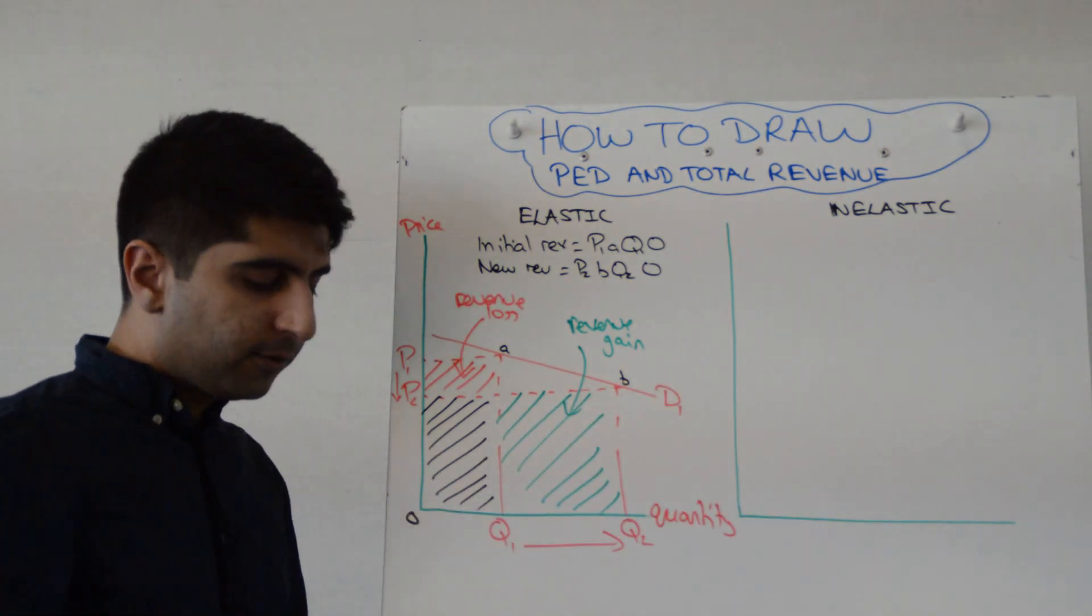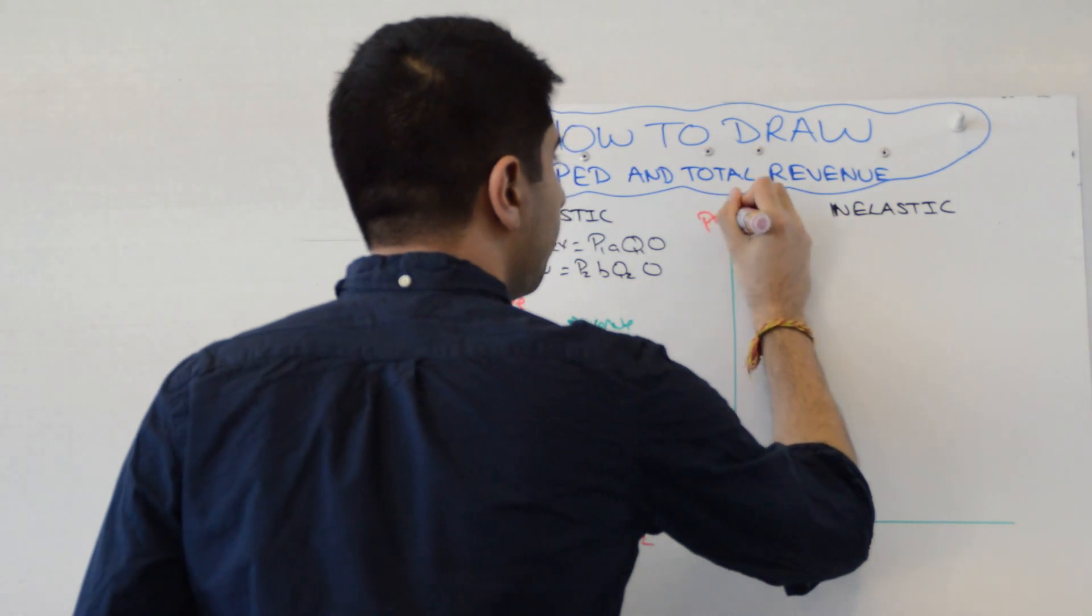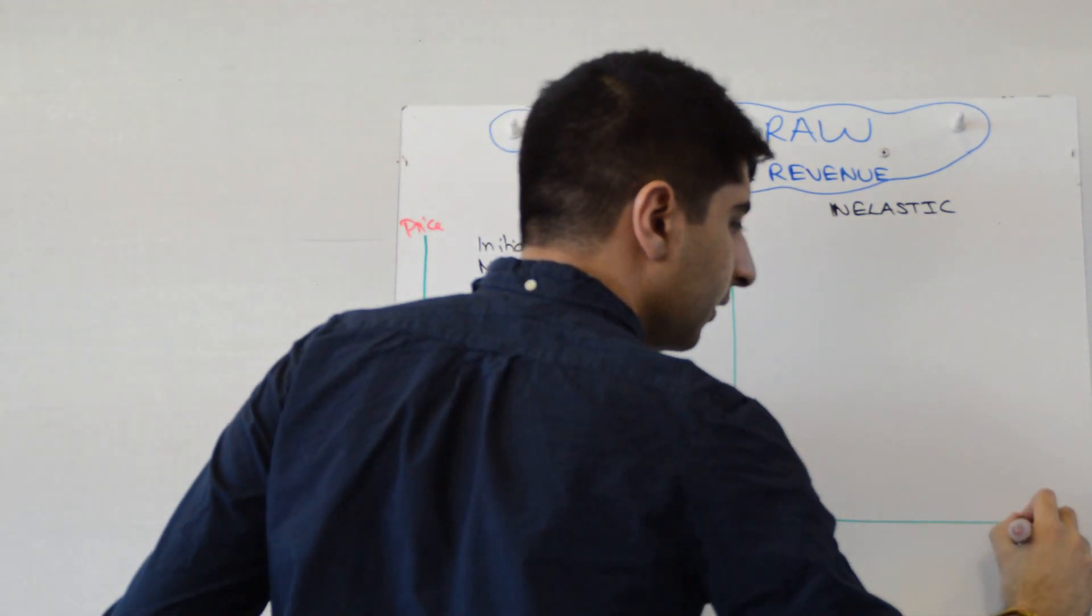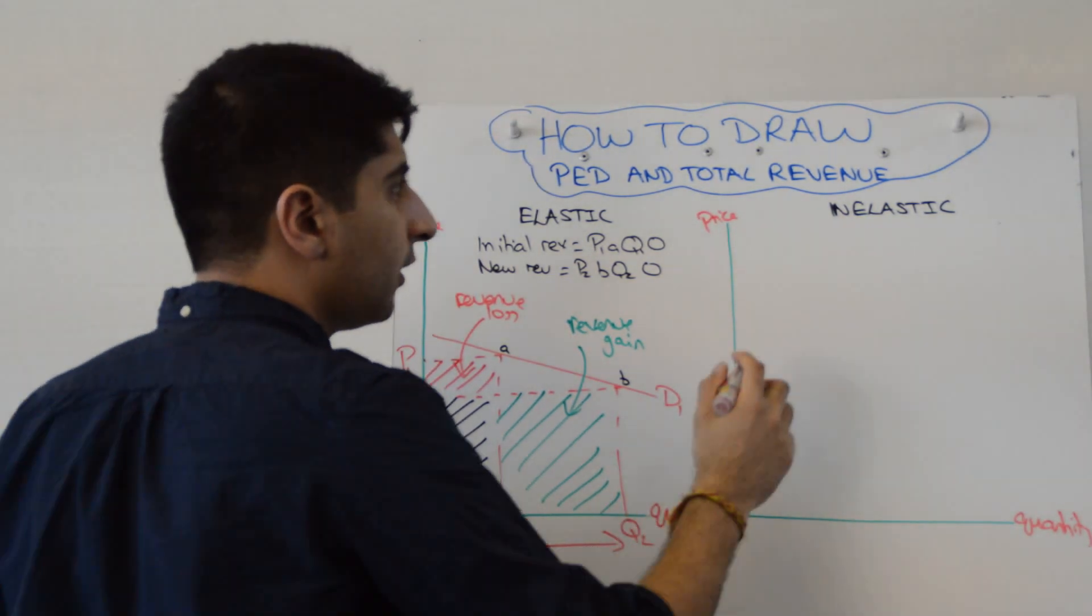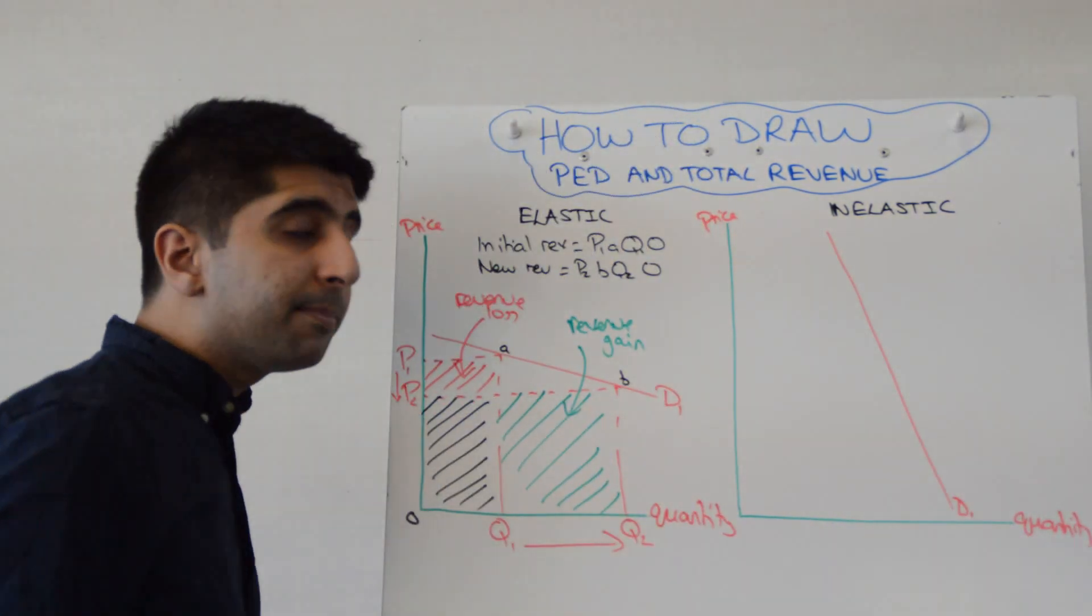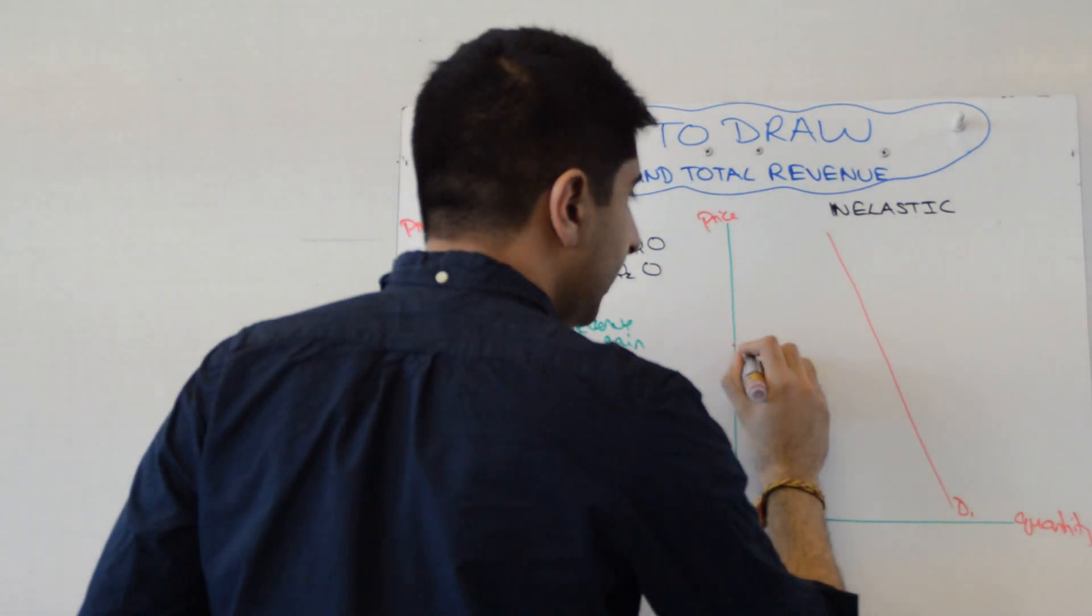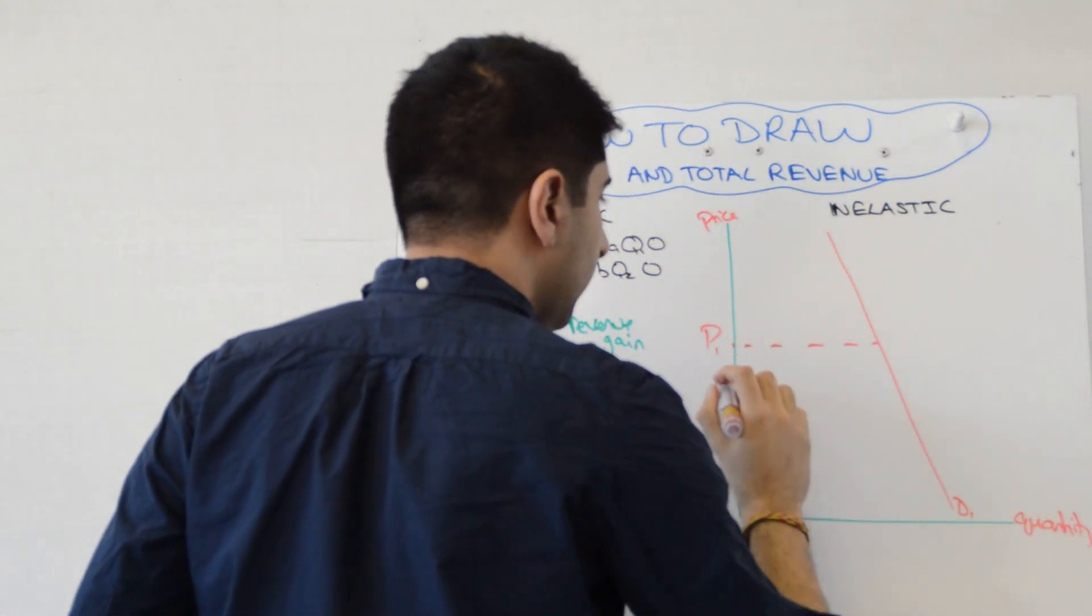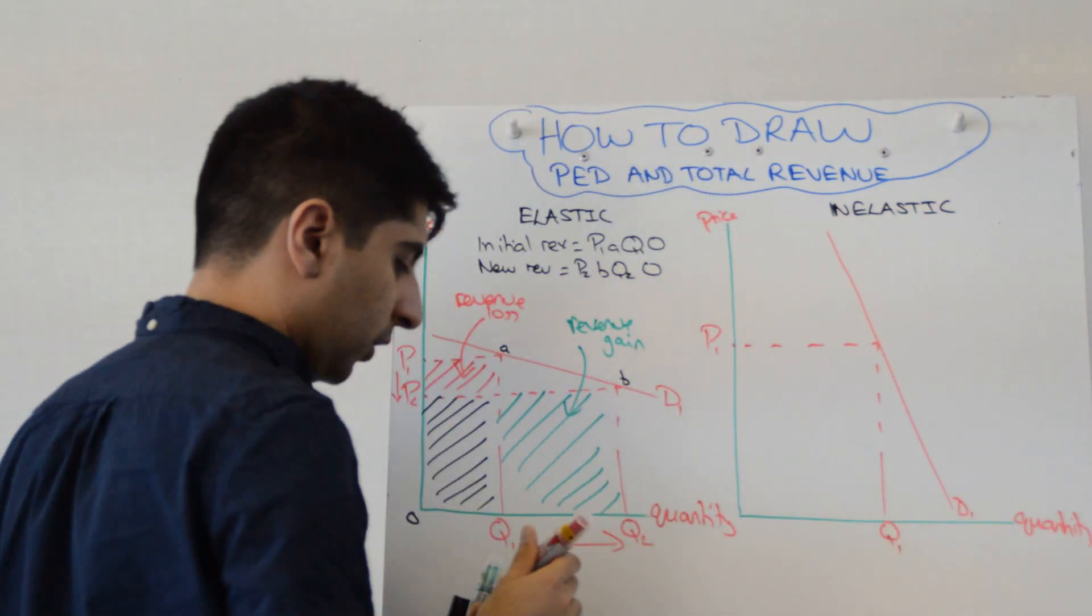What about when demand is price inelastic? Well, again, we start by labelling our axis price and quantity. And then we go through exactly the same process. But now we're going to draw a demand curve that's pretty price inelastic, i.e. quite steep. You want to show an initial price. We call that P1. And with that price, a quantity of Q1.